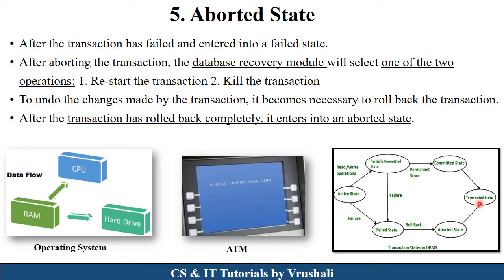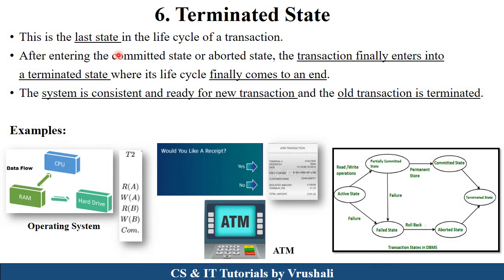The last state is the Terminated State — the final state in the life cycle of a transaction. Every transaction eventually reaches terminated state, either after successful commit or after being aborted. In the ATM example, after withdrawing money and confirming the receipt, the session ends and the machine is ready for the next customer. In the OS example, after committing all data to the hard disk, the CPU is ready to perform a new operation — this is the terminated state.